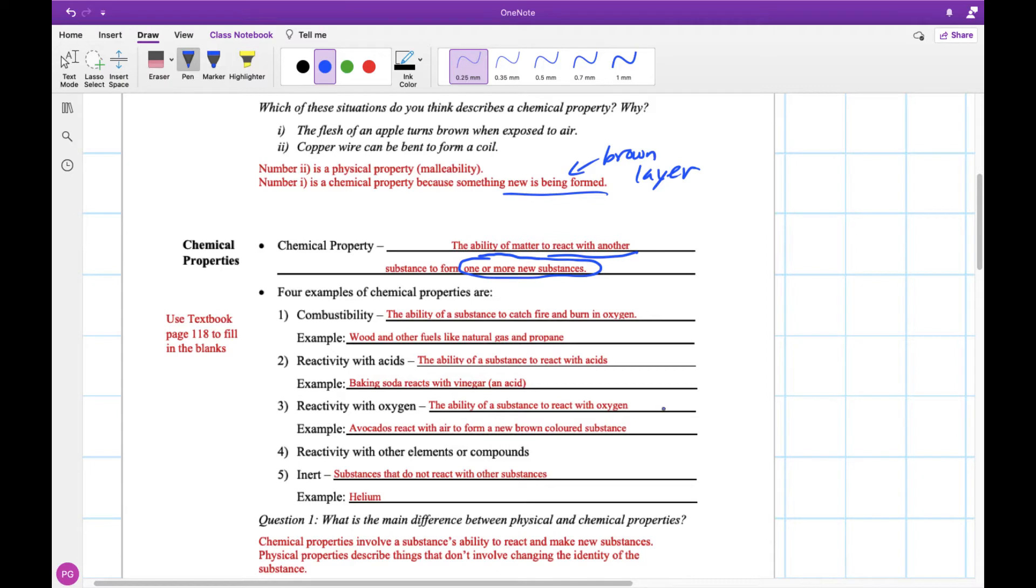Reactivity with oxygen. So how something reacts with oxygen. Avocados making that brown substance, same with our apples. So if something like that is reacting with oxygen, that's another example of a chemical property. Some other things like certain types of metal don't react with oxygen. But one very common thing is fruit and vegetables will form that sort of brown layer.